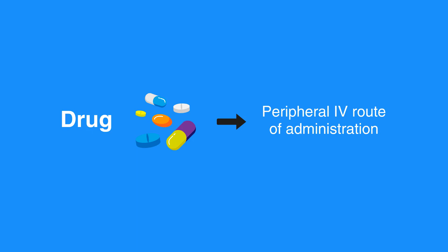When using the peripheral IV route of administration, drugs can take up to two minutes or more to reach central circulation. The effect of medications given may not be seen until even longer. High quality CPR helps circulate these drugs and is an important part of resuscitation.